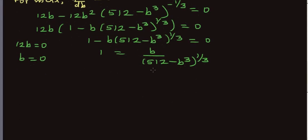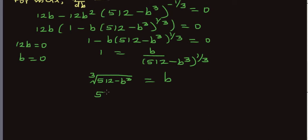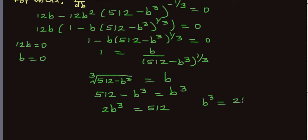Solving further: the cube root of (512 − B³) equals B. Cubing both sides gives 512 − B³ = B³, so 2B³ = 512, meaning B³ = 256, and therefore B = ∛256.